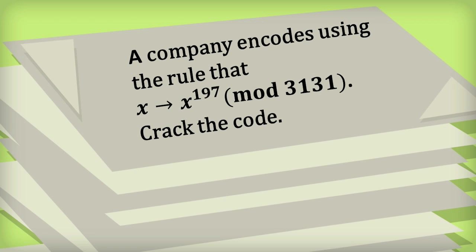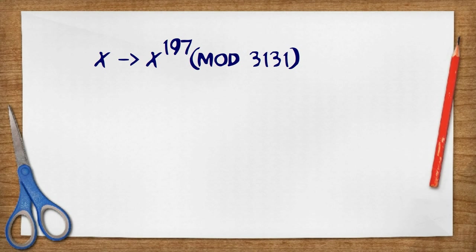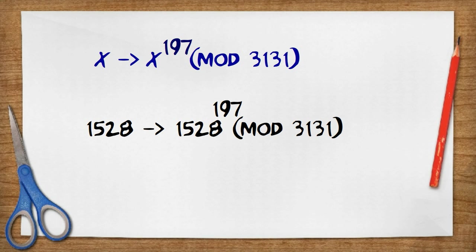Here's a typical problem that you might find on a test or an exam. A company encodes using the rule that x becomes x to the power of 197 modulo 3131. Crack the code. Before we crack the code, let's make sure we understand how the encoding works. If we wanted to encode 1528, we raise 1528 to the power of 197 and then take the remainder when we divide by 3131, and that gives us 2933.